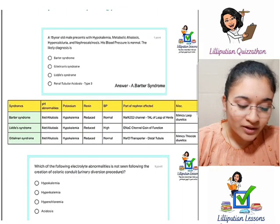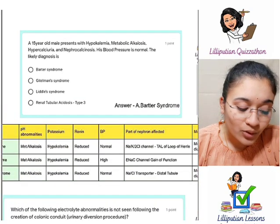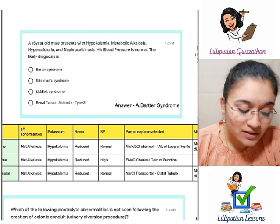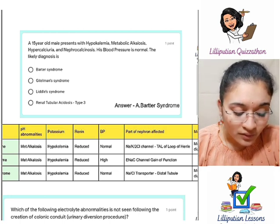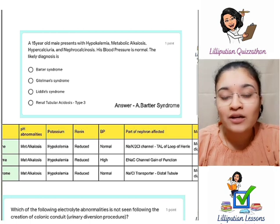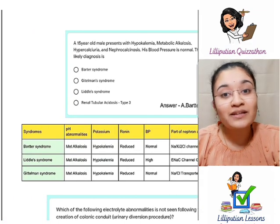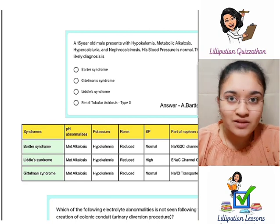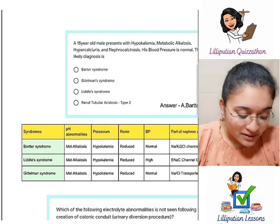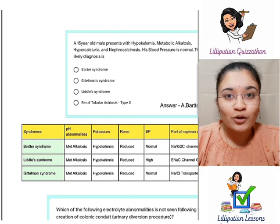Question number 1: a 15-year-old male presents with hypokalemia, metabolic alkalosis, hypercalciuria and nephrocalcinosis. His blood pressure is normal. The likely diagnosis is? Here we need to know the monogenic forms of hypokalemia. In the perspective of entrance exams, there are three most important monogenic forms: Bartter syndrome, Liddle syndrome, and Gitelman syndrome.